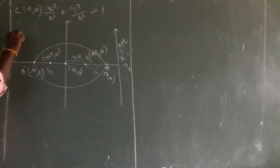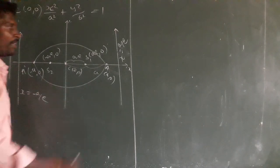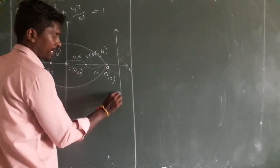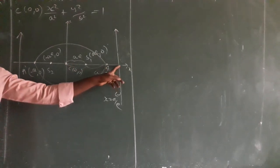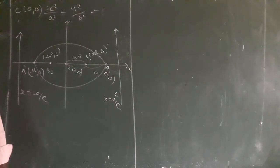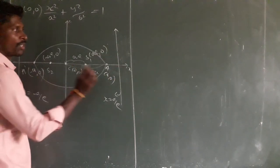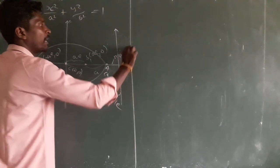One more directrix you can draw on the other side. That equation is x equal to minus A by E. Equation of directrix: x equal to A by E. So this is the distance from center to directrix — A by E. In the x-axis, the directrix is perpendicular to the x-axis. The x-axis is called the major axis.